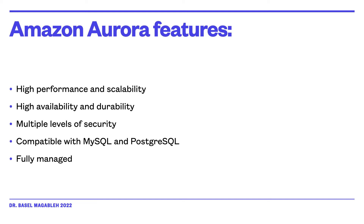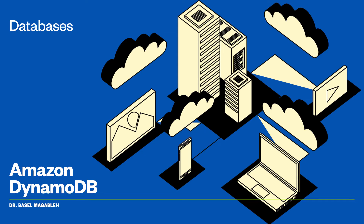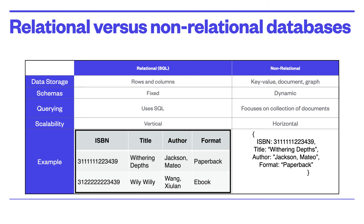Now let us look at Amazon DynamoDB, which is a NoSQL database. What is the difference between relational and non-relational databases? A relational database (RDS) works with structured data that is organized by tables, records, and columns. RDS establishes well-defined relationships between database tables — for example, a teacher teaches many students, and a student is taught by one teacher. We normally use structured query language to query the database. With relational databases, you might have difficulty scaling out horizontally or working with semi-structured data, which means you have to think about a non-relational database.